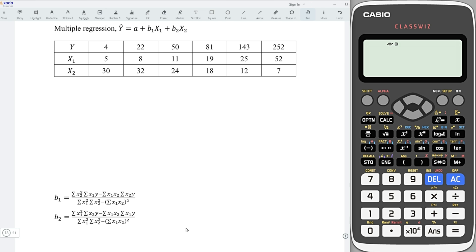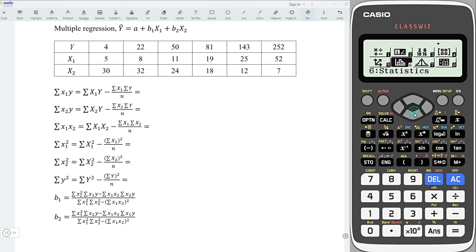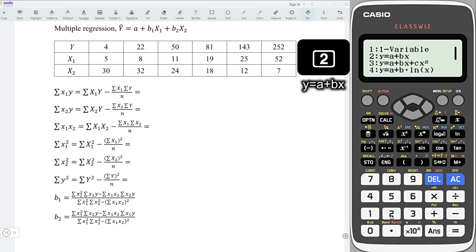To obtain the coefficients, we need sum of squares, which means that we need the summation. To do so, press on menu and look for the statistics function, that is 6. Choose 2 for linear regression.